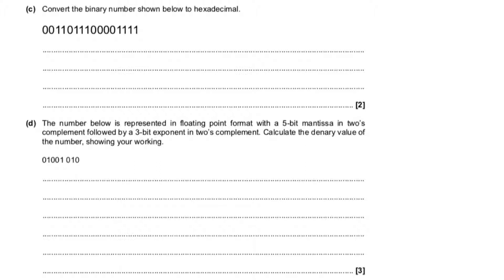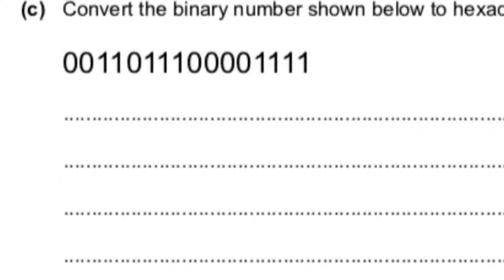So we're looking at converting a binary number and we need to convert it to hexadecimal. As we know, one hexadecimal digit is worth four bits. So what we can say is: take the first four bits and convert them to a hexadecimal digit, then the next four, then the next four, then the next four — so there will be four hexadecimal digits in total. For 1, 1, 1, and 1 — that's an 8 plus a 4 plus a 2 plus a 1, which makes 15. But in hexadecimal we don't call it 15, we call it F.